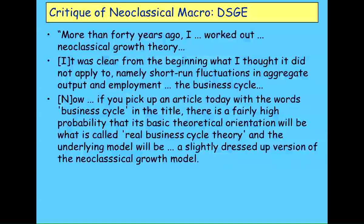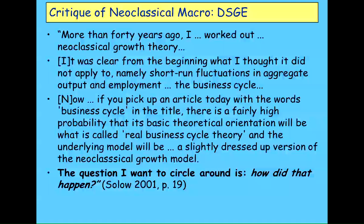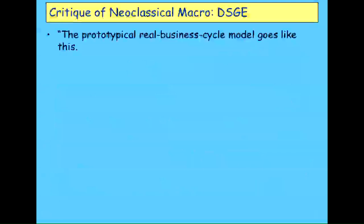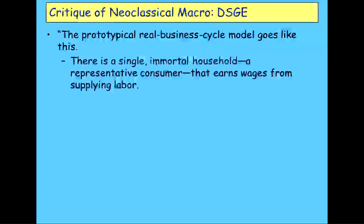The best critique of the DSGE model is done by Robert Solow — the same person whose growth model it was built from. Hicks designed ISLM; Solow designed DSGE — and Solow is outraged. Unlike Hicks, who apologised, Solow's position is: 'What the hell have you people done with my model?' Speaking in the early 2000s he said: 'More than 40 years ago I worked out neoclassical growth theory, and it was obvious to me that one thing it did not apply to was the business cycle.' Yet now, if you pick up an article with 'business cycle' in the title, the underlying model will be a slightly dressed-up version of the neoclassical growth model.